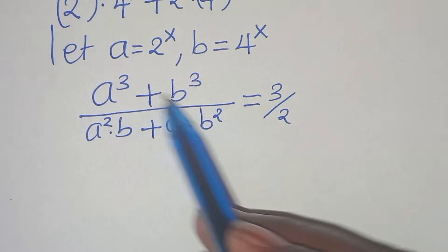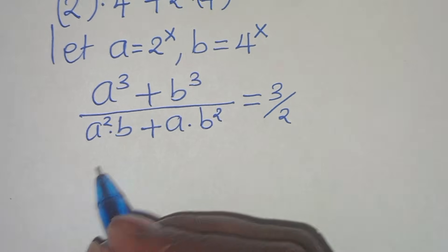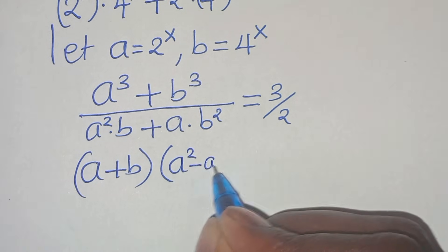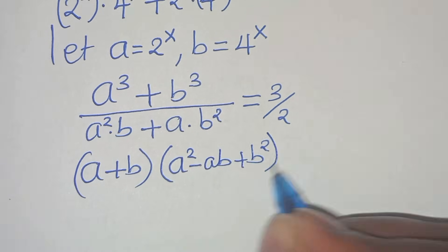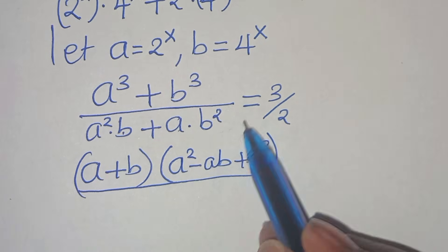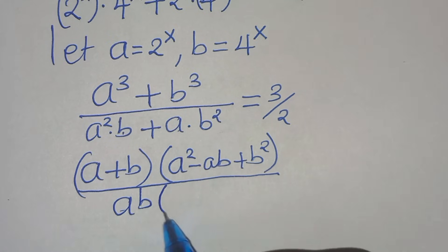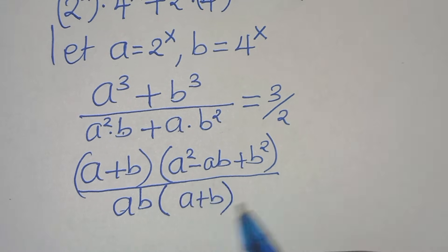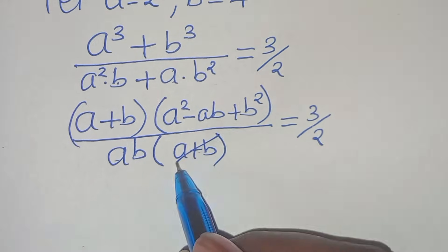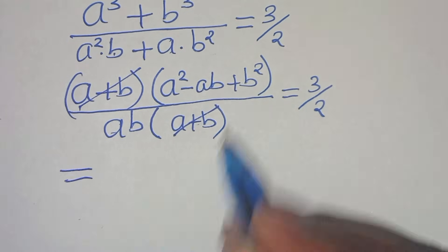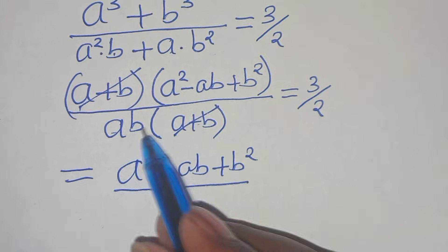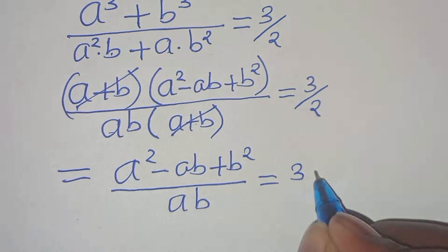In the numerator, a cubed plus b cubed is the sum of two cubes, which we can express as (a + b)(a squared minus a·b plus b squared). In the denominator, a squared·b plus a·b squared has a·b as a common factor, so we factor out a·b to get a·b·(a + b). Since (a + b) is common in both numerator and denominator, we can simplify to get (a squared minus a·b plus b squared) divided by (a·b), equal to 3 over 2.